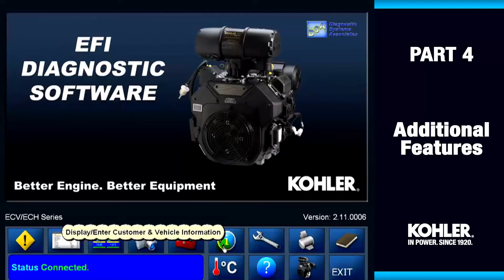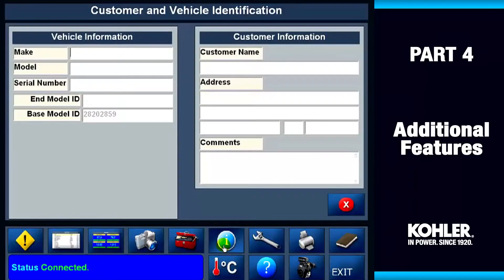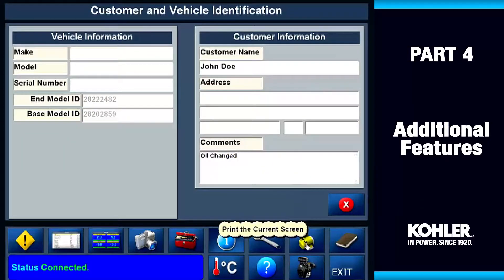Now we'll look at the Customer Vehicle Information screen. This screen lets you enter information about the vehicle and owner and print it for your customer files. To capture the information, print the screen — otherwise the information will disappear.